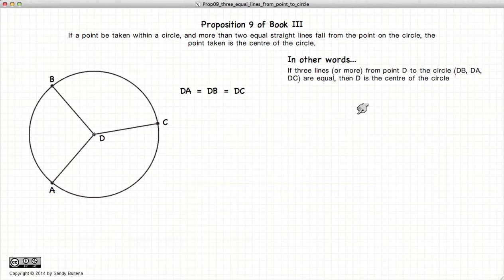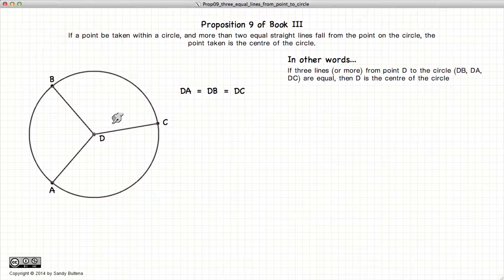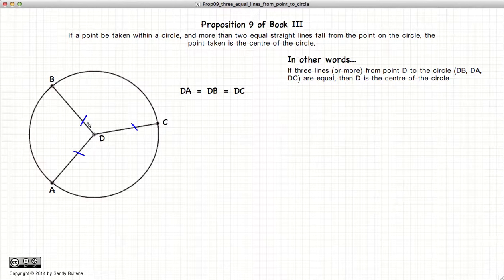which states that if we have a circle, and from this circle we have two or more lines that are equal in length, then this point must be the center of the circle.